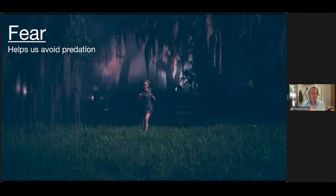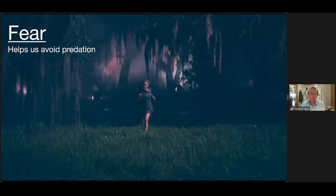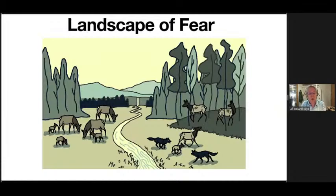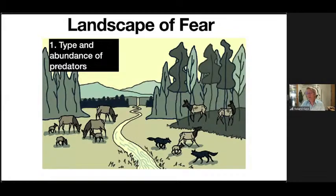Fear is how we know to avoid dangerous places — it shapes behavior before you act so you avoid those dangerous places. Fear is a very human emotion but it exists in all kinds of other animals, whether it manifests the same way we don't know, but we know it's important. This shapes what we call the landscape of fear. On the left side there are no wolves and the elk are totally chilled out eating a lot; on the right side there are wolves and those elk are nervous, running around.